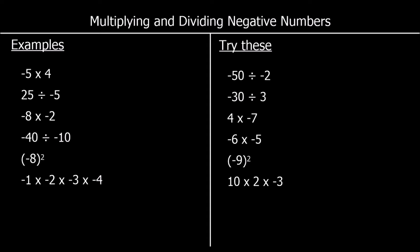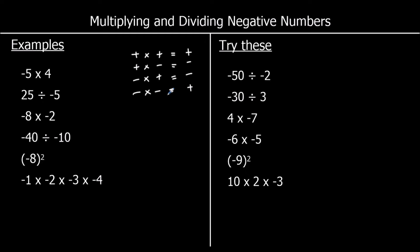Multiplying and dividing negative numbers. When we have a positive times a positive, we get a positive answer. A positive times a negative, or a negative times a positive, gives a negative answer. A negative times a negative is a positive. The rules for dividing are the same: positive divided by positive is positive, positive divided by negative is negative, negative divided by positive is negative, and negative divided by negative is positive.